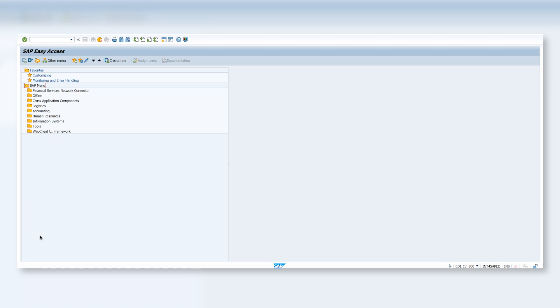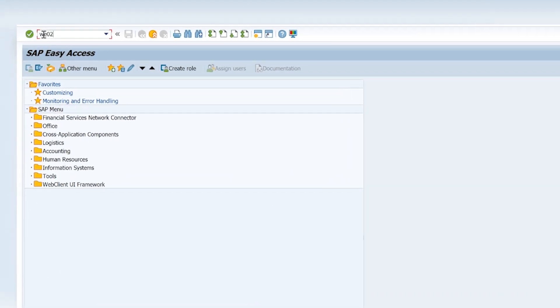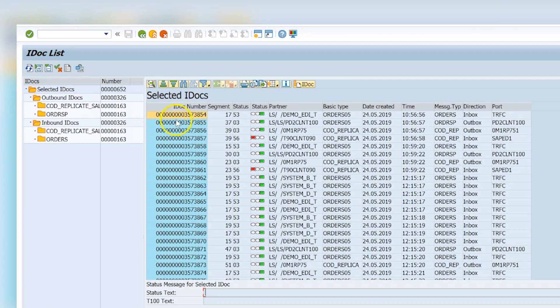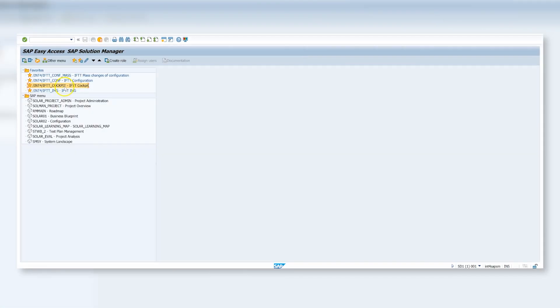As a first step, we need to find the IDOC messages which created the sales orders before the test system was converted to S4HANA. We can do it from transaction WE02. We need to select here 20 inbound IDOCs. Once we have the IDOC numbers, we can open the INT4IFTT application to create the test cases. We can do that from INT4IFTT cockpit.